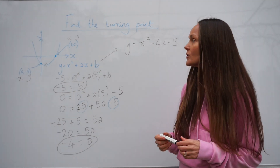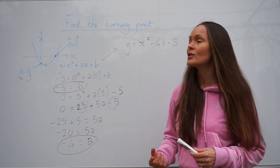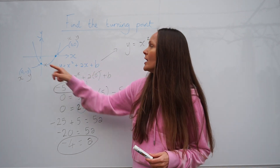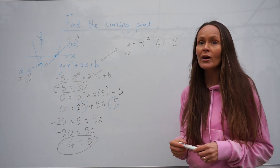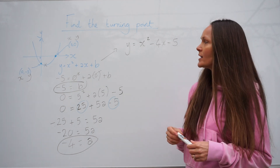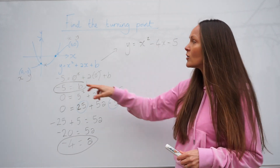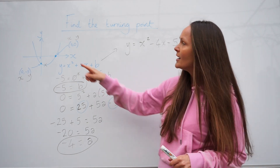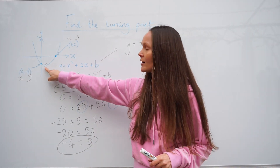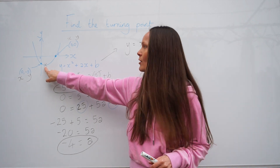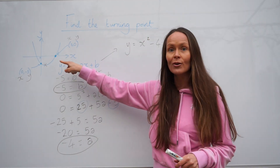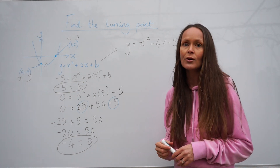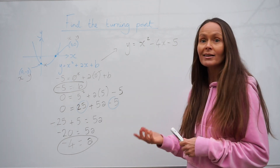Next we have to work out the coordinates of the turning point — the coordinates of the minimum point on the curve. To work out the coordinates, we need to work out what the gradient of the curve is; we need to differentiate the curve. At the turning point, the gradient is equal to 0. The gradient is negative on the way down, then stationary at the bottom — so the gradient is 0 — and then positive going up. If you don't know how to differentiate, I suggest you have a look at my other video on differentiation to practice that first.